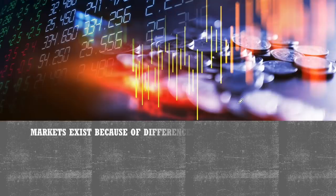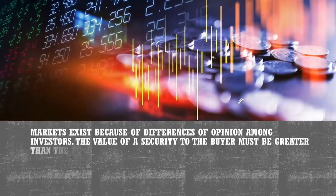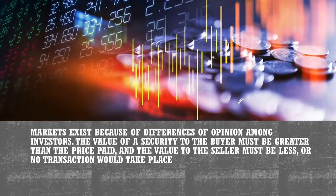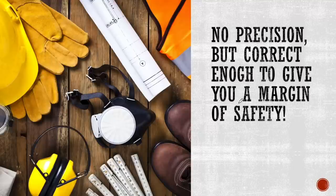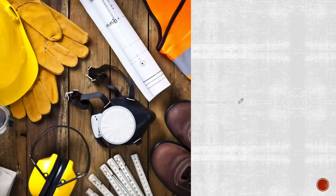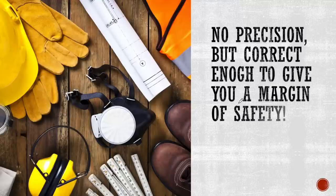Markets exist because of differences of opinion among investors. The value of a security to the buyer must be greater than the price paid, and the value to the seller must be less — or no transaction would take place. Differences emerge from differences in assumptions regarding the future, different intended uses for the asset, and differences in the discount rates applied. The key is no precision, but correct enough to give you a margin of safety when it comes to investing.